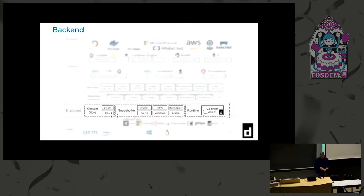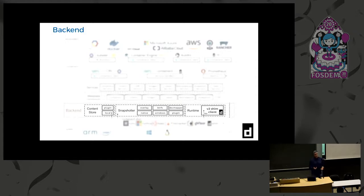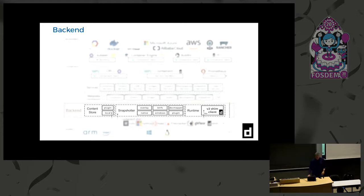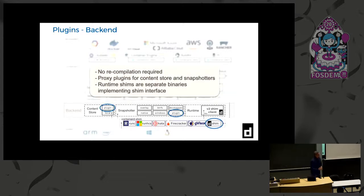Let's talk more about pluggability. At the bottom end, the content store obviously has a default implementation in containerd, but you can write your own. Snapshotters include built-in options like btrfs, overlay, and dev mapper, plus pluggability for remote snapshotters. For shims, we provide the runc implementation, but that's where gVisor, kata, and Firecracker can write their own shim. The oras project has written their own content store plugin.